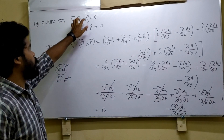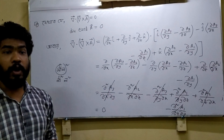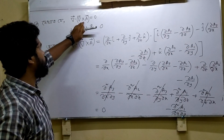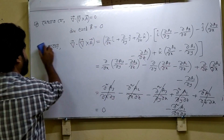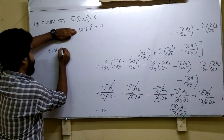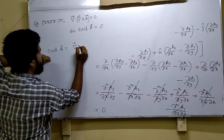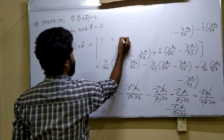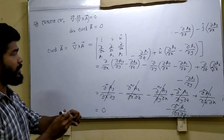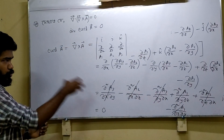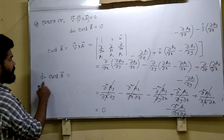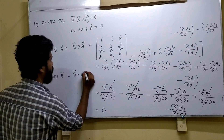This result is 0, meaning nabla dot (nabla cross A) equals 0. That's the result. If we say the divergence of curl A equals 0, we can see what happens. This means del dot (nabla cross A) equals 0. So divergence of curl A means nabla dot (nabla cross A), and the result is always zero. This is the identity: the divergence of the curl of any vector field A is identically zero.